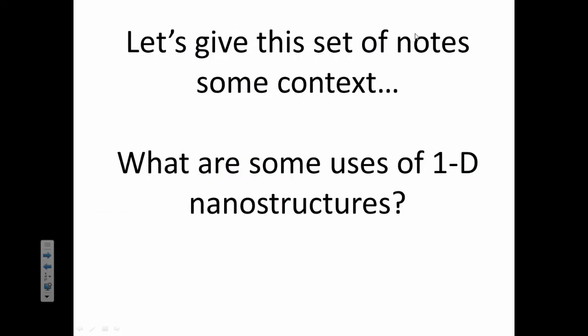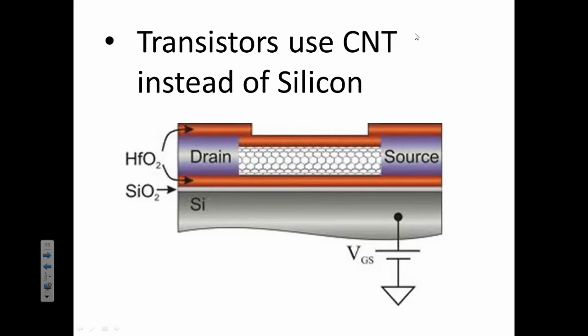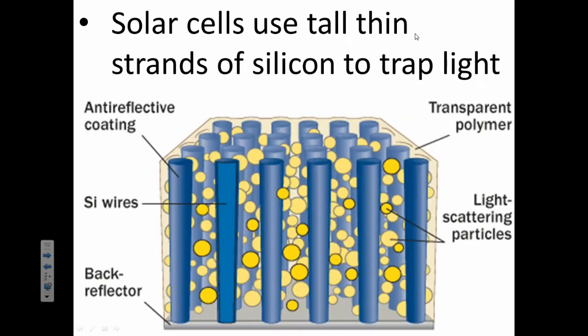We talked about what are some of the uses of these and why do you even care about 1D nanostructures. They're being used in a lot of automobile applications, using carbon nanotube fibers to make the car stronger yet lighter. They're using it in armor. They use carbon nanotubes as transistors now instead of silicon. They can use tall silicon nanowires with solar cells because they're really good at trapping light.